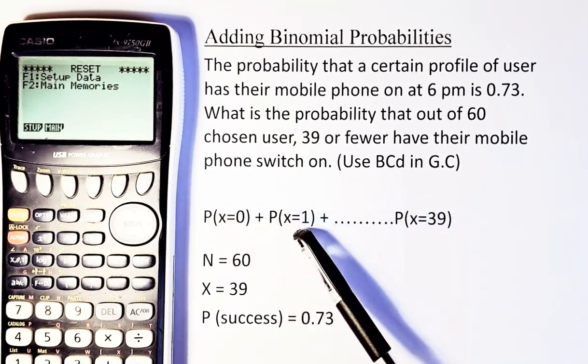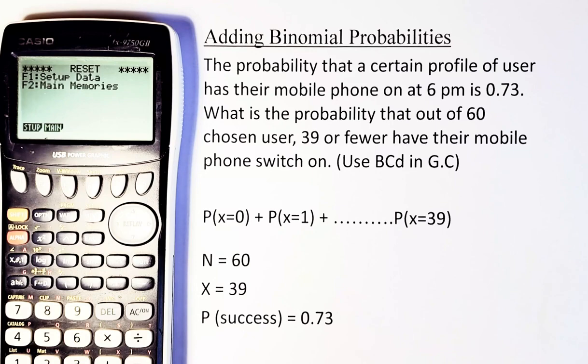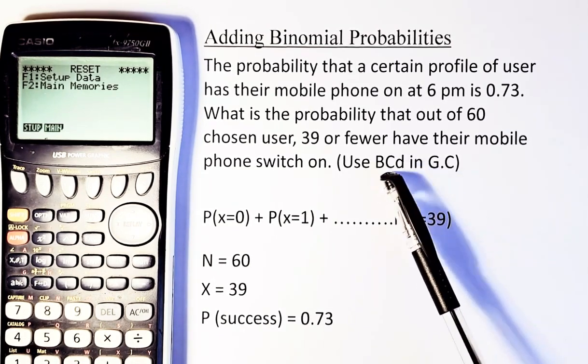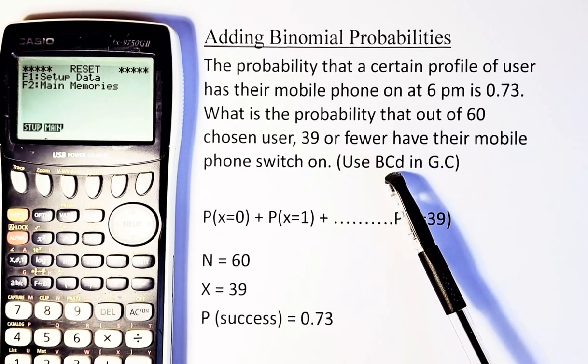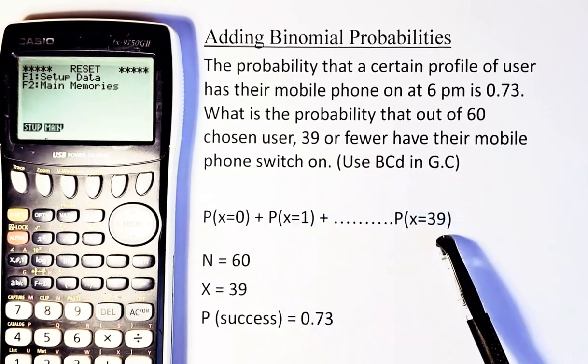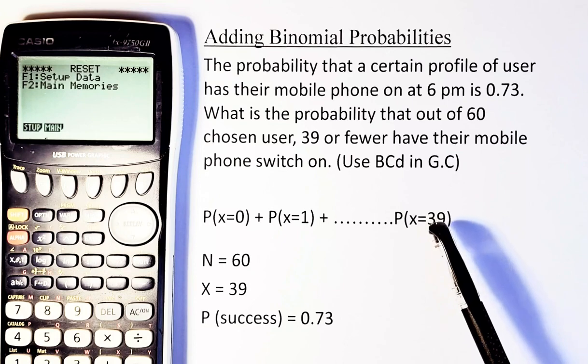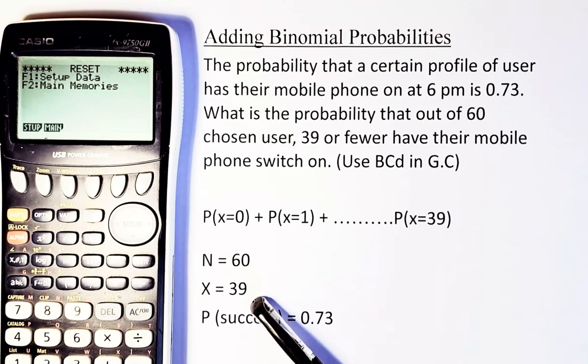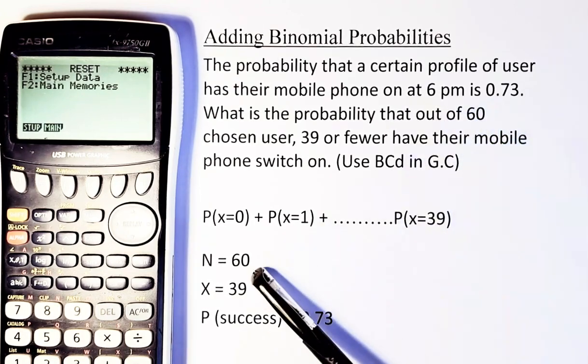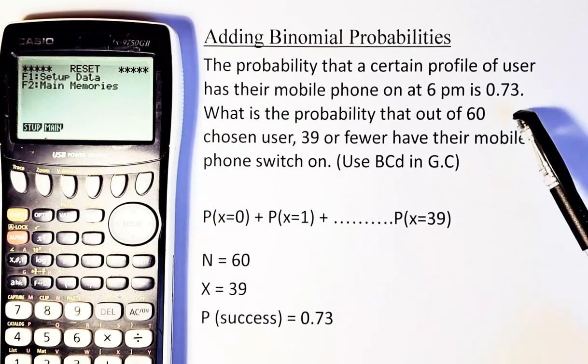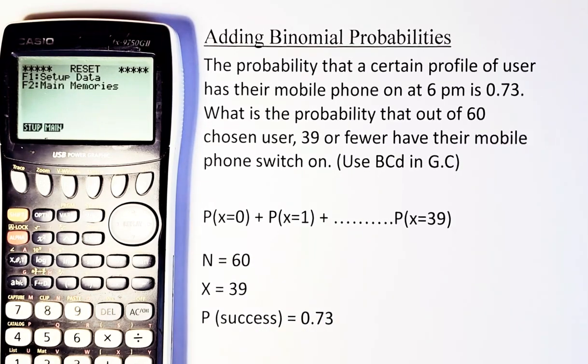You can do BPD, you can do 0, 1, 2, 3, 4, 5, but it takes a long time. But the graphic calculator has this function where they can accumulate them, so that's why it's called BCD. C means accumulate. So from 0 to wherever you stop. So now your X is going to be stopped at 39, so your X is 39. There are 60 people, so your N is 60, and the success is 0.73, and now you are just going to key in your calculator.